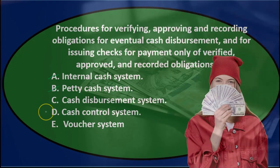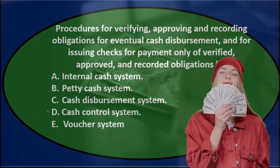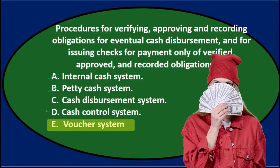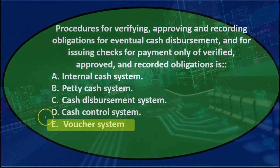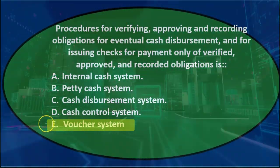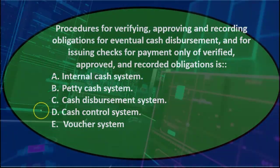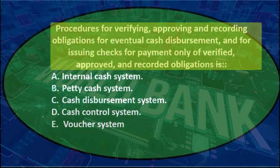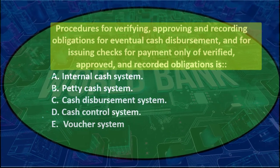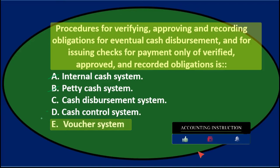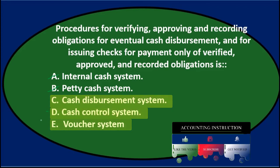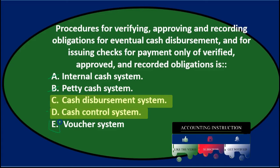D — cash control system: it could be a type of control. E — voucher system: that sounds reasonable too, since the voucher system is a type of internal control over payments of cash. So we're down to C, D, and E. Reading through the definition one more time — procedures for verifying, approving, and recording obligations for eventual cash disbursements and for issuing checks for payment only of verified, approved, and recorded obligations — of those three, it's actually the voucher system that is the correct answer.